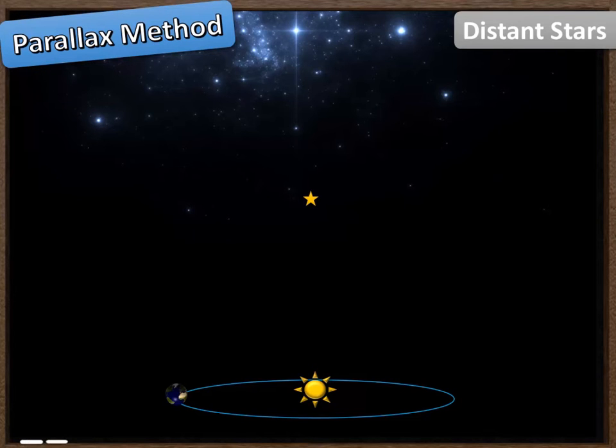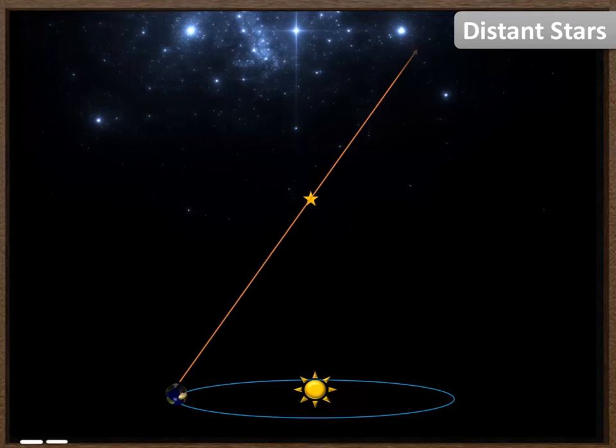We're now going to think about how we measure the distance to stars in space. Here we have the solar system with the Sun at the centre and the Earth is about to orbit the Sun. This is the star that we are trying to measure the distance to. Very far away we have some quite distant stars that we're going to use as a reference point. So what we do is we look out into the night sky from the Earth and we locate the star that we are trying to measure the distance to, and we work out which stars align with it.